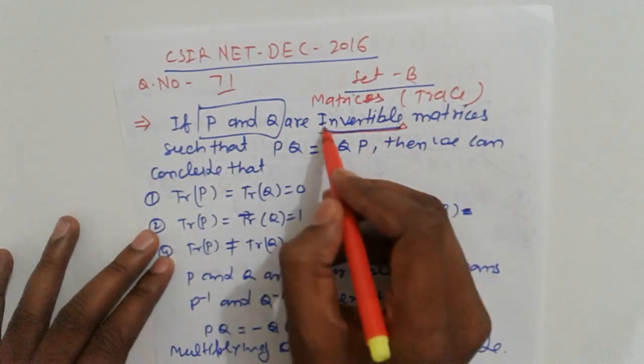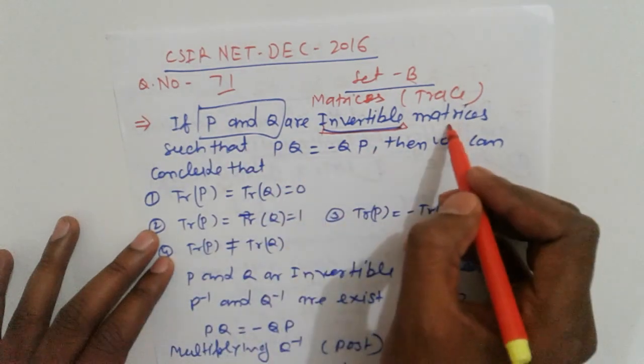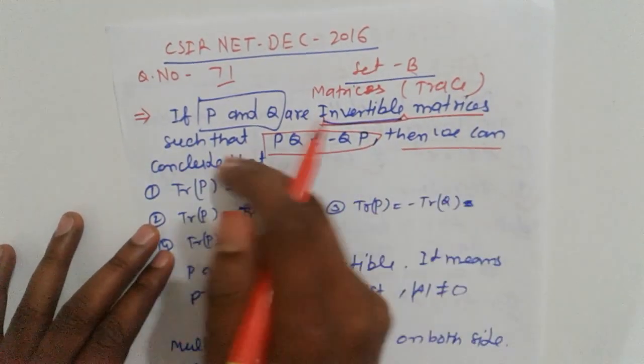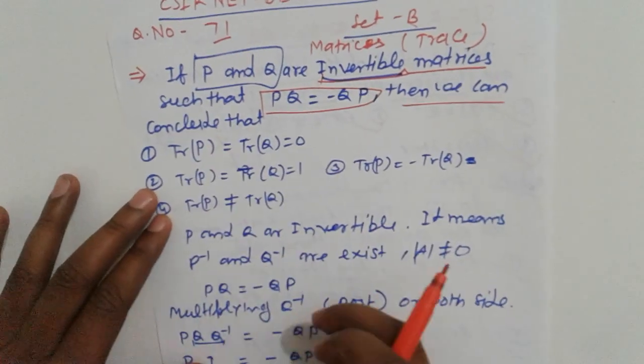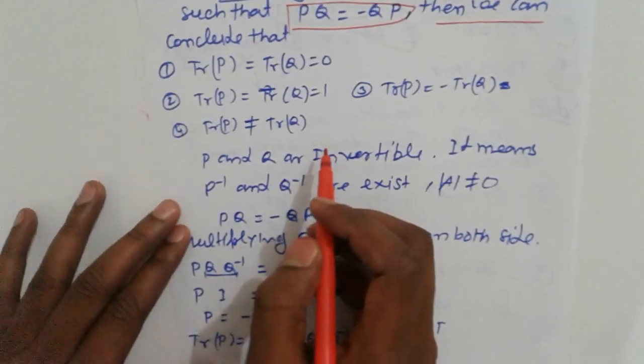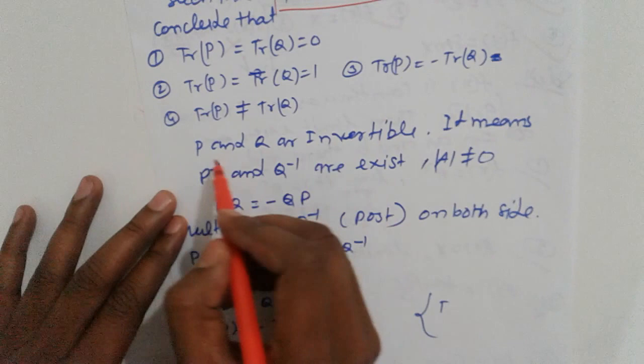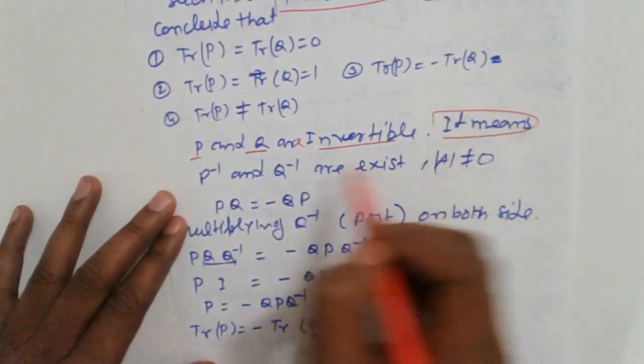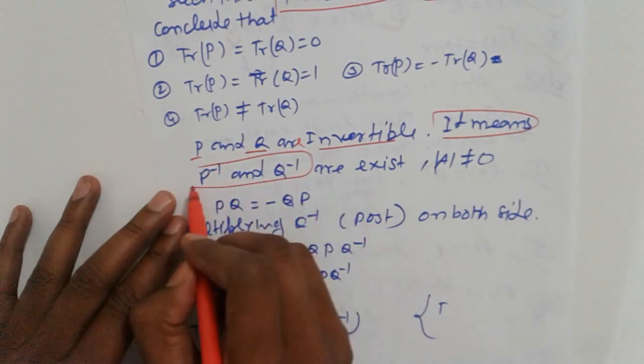The given statement is: P and Q are invertible matrices such that PQ = -QP. We can conclude: if P and Q are invertible, then P inverse and Q inverse exist.